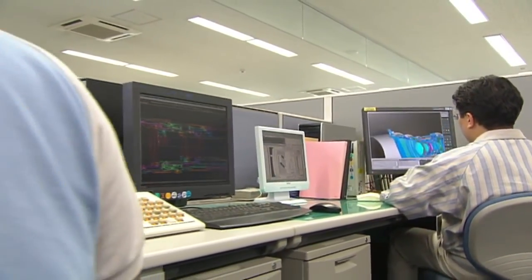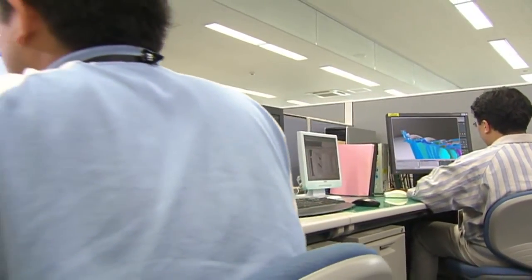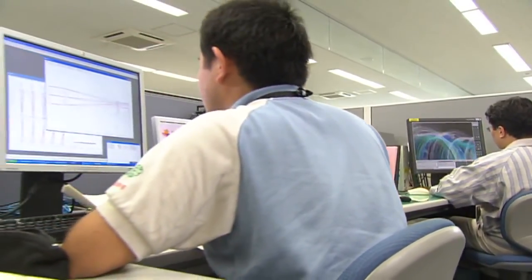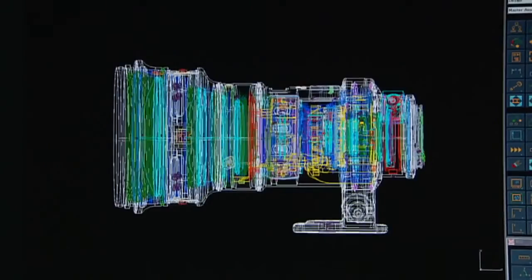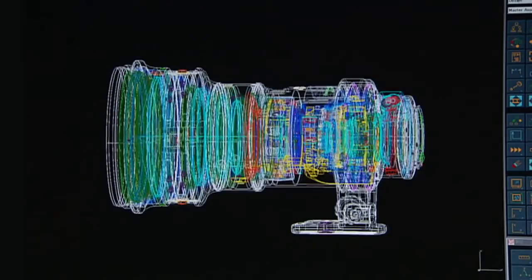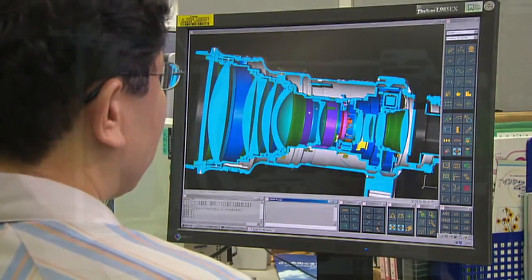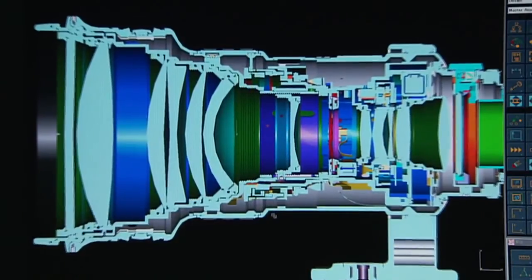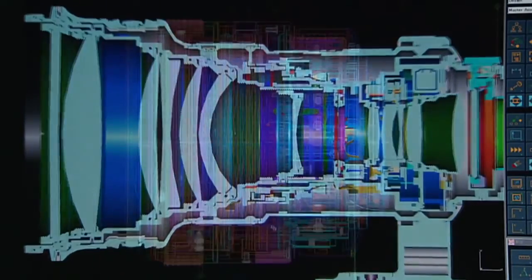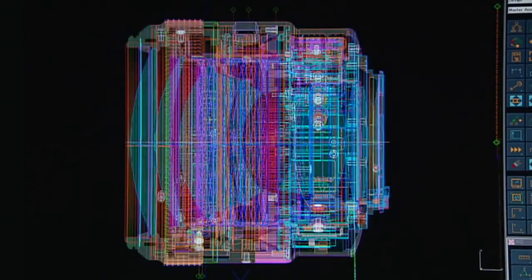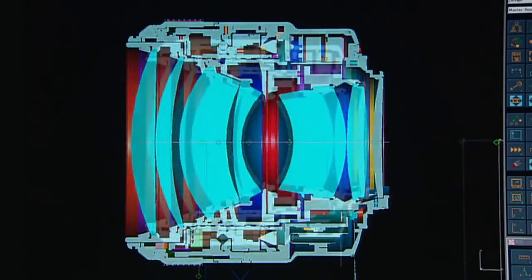Canon's pursuit of the ideal lens has enabled us to overcome various aberrations that were thought to be insurmountable. When designing lenses, Canon uses original computer software that incorporates our years of accumulated know-how to discover the optimum lens configurations and positions to minimize all aberrations.